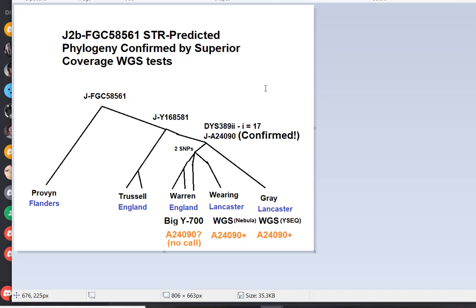He knew he traced his line to Lancaster. And Y-Full found, because he did a WGS test, he has coverage for A24-090. 24-090, I guess. So he had coverage for it.